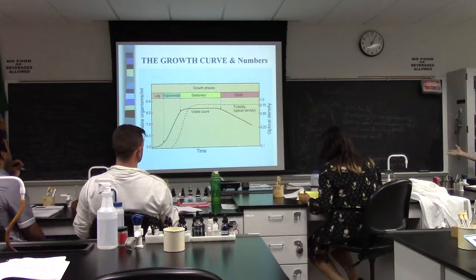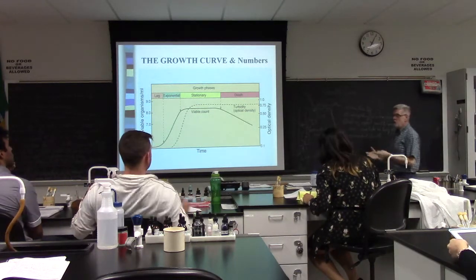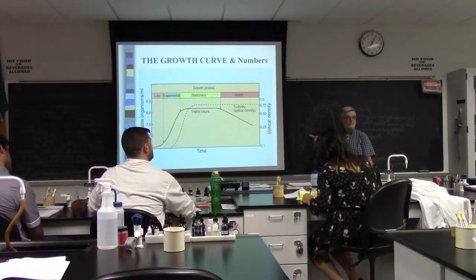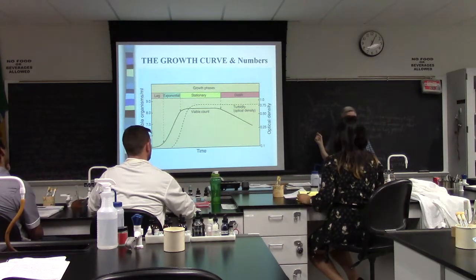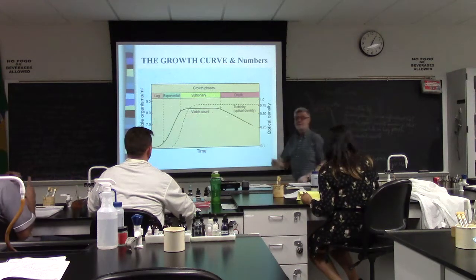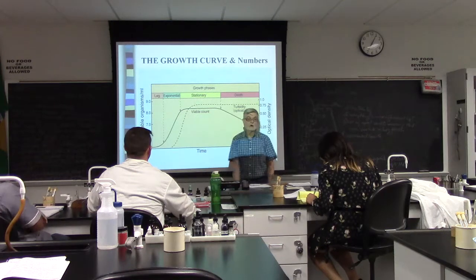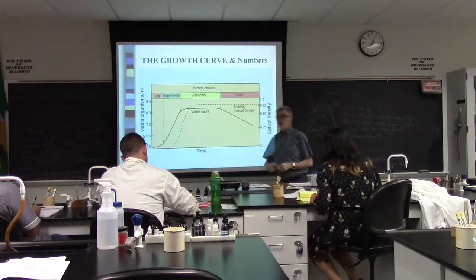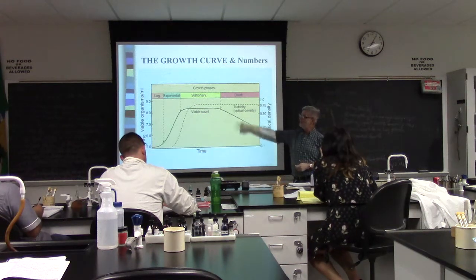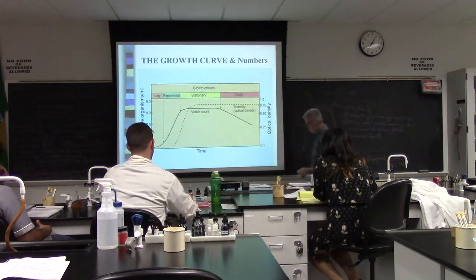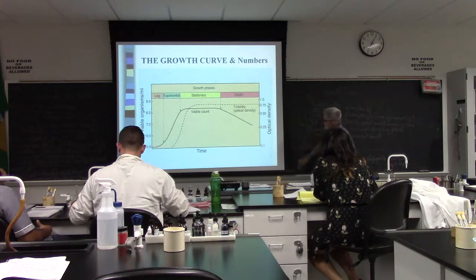If you don't believe in the growth curve, believe in it — because you can take a culture and come back every hour and measure its cloudiness. It's called turbidity, measured with a spectrophotometer. Plot it on log graph paper and you will get the growth curve. Every living thing does it, and you can prove it to yourself by doing this little experiment.